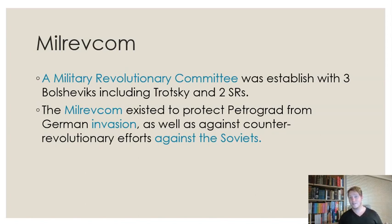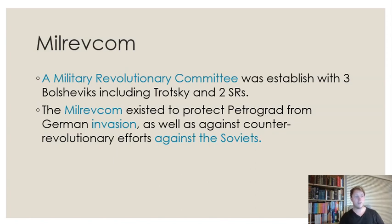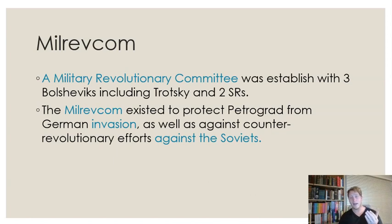The Bolshevik, garrison, and Petrograd Soviet response was essentially to tell Kerensky to stop right there. Instead, the Petrograd Soviet elected a Military Revolutionary Committee — the Milrevcom — made up of only five people: three Bolsheviks including Trotsky, and two Socialist Revolutionaries, to balance the socialist representation. It existed essentially to protect Petrograd from German invasion and also against any counter-revolutionary attacks by the government itself. You were seeing almost a civil war between the provisional government and the Petrograd Soviet.